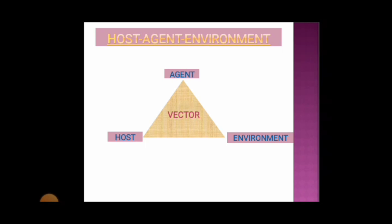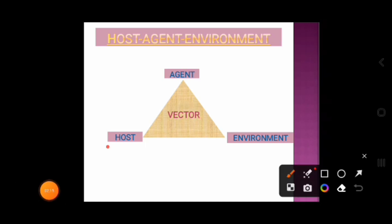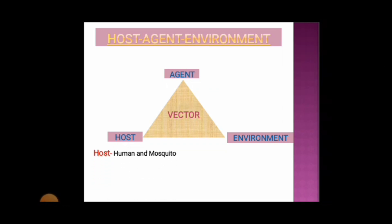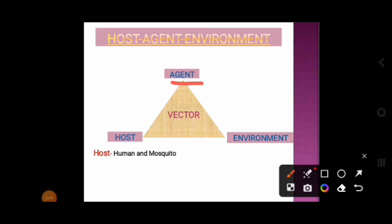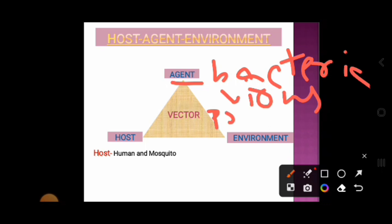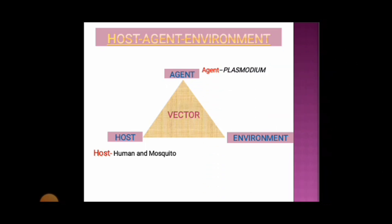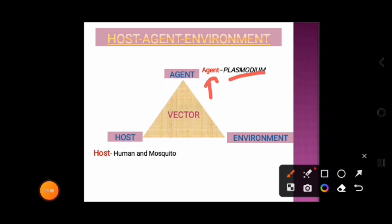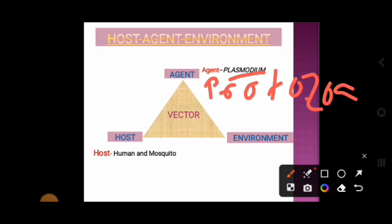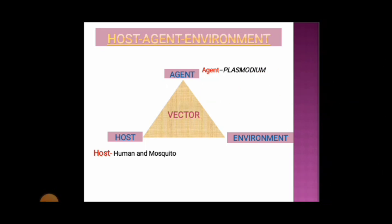This is the disease triangle model, also known as the epidemiological triad model. It is a conceptual model that shows the interaction between the host, agent, and environment. The host is an organism — usually a human or animal — that harbors the disease. Here the hosts are human and mosquito. The agent is the cause of the disease, which may be bacteria, virus, protozoa, fungi, or any physical or chemical agent. In malaria, the agent is Plasmodium, which is a protozoa.